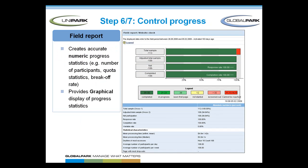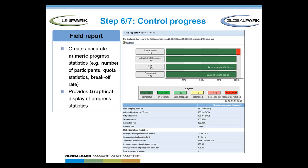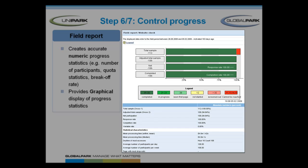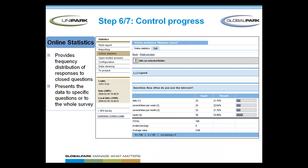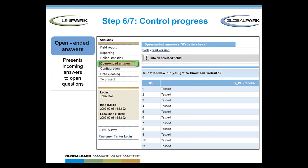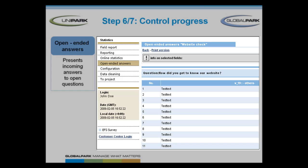In Step 6, you monitor the progress of your project by means of controlling features like the field report, the online statistics, or the online report. The field report provides numeric and graphical information about progress statistics, including the number of started, suspended, and completed interviews and the break-off rate. The online statistics provide a comprehensive frequency distribution of given answers at any time during the survey. The sub-menu Open-ended Answers lists all answers to open-ended questions.